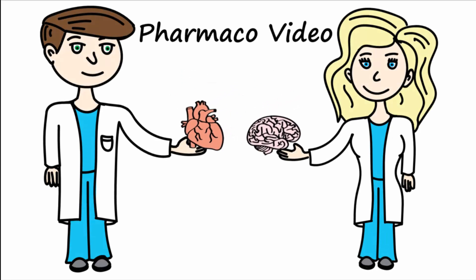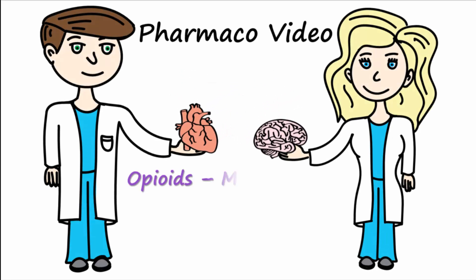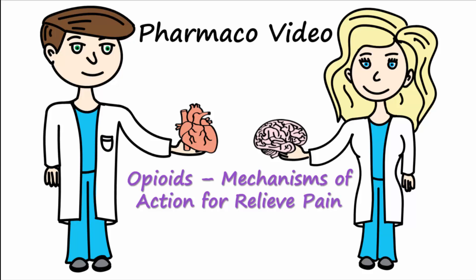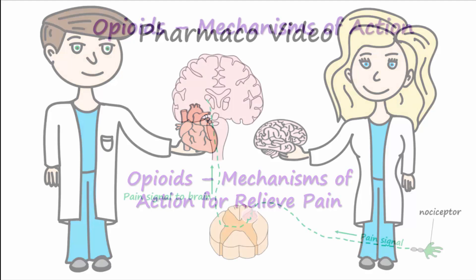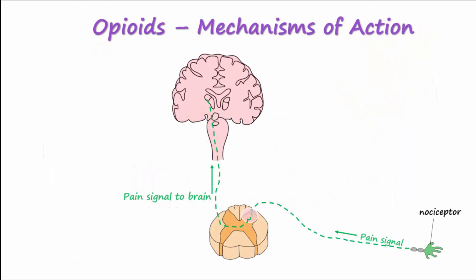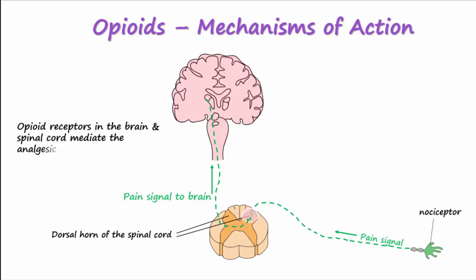Today, let's discuss the mechanisms behind the pain-relieving effects of opioids. Located in the brain and dorsal horn of the spinal cord are opioid receptors that mediate the therapeutic analgesic effects and side effects of opioid medications.